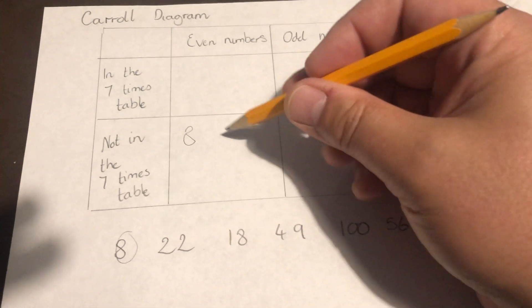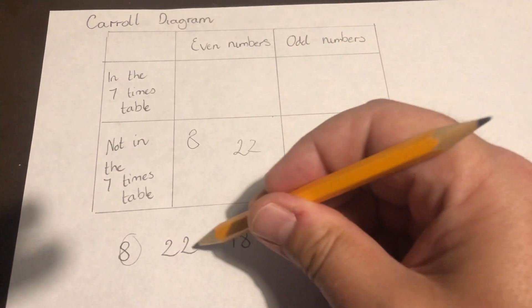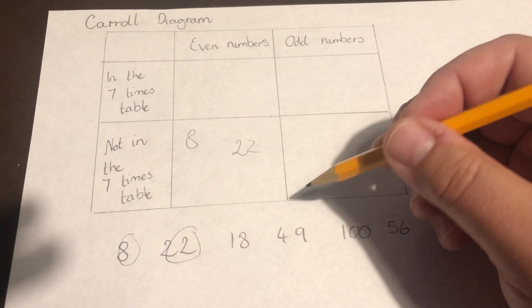I've got 18, 22 again is an even number, and it is not in the seven times table.